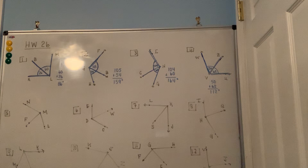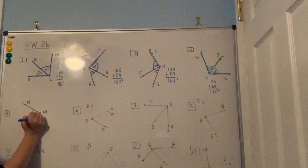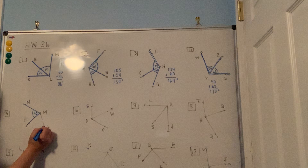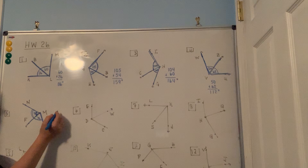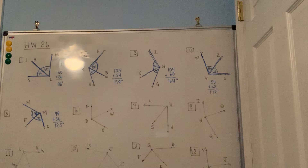Question five: angle FMN is 99 degrees, and angle LMF — the bottom portion — is 36 degrees. The question asks for angle LMN, which is the full angle. You add 99 degrees and 36 degrees together, and using your calculator you get a total angle of 135 degrees.